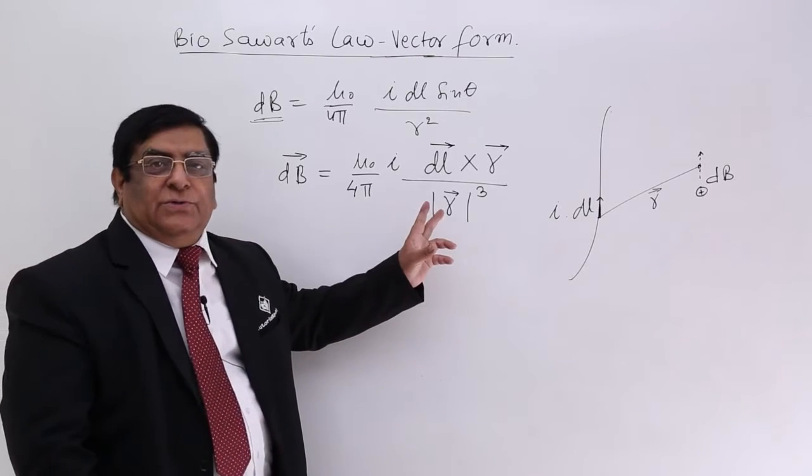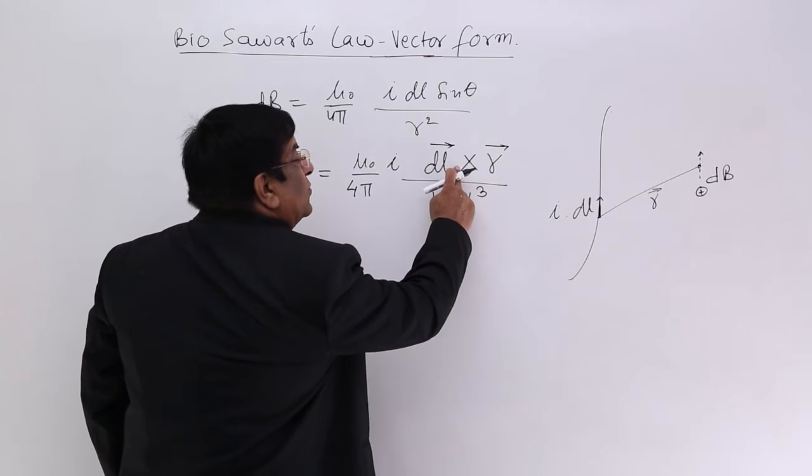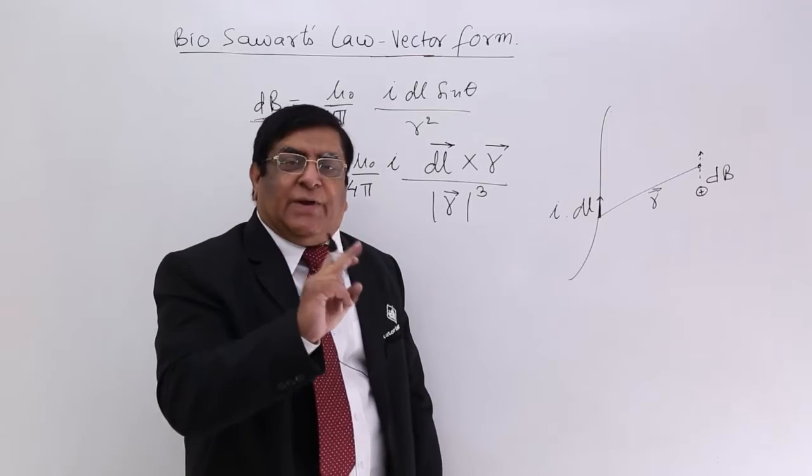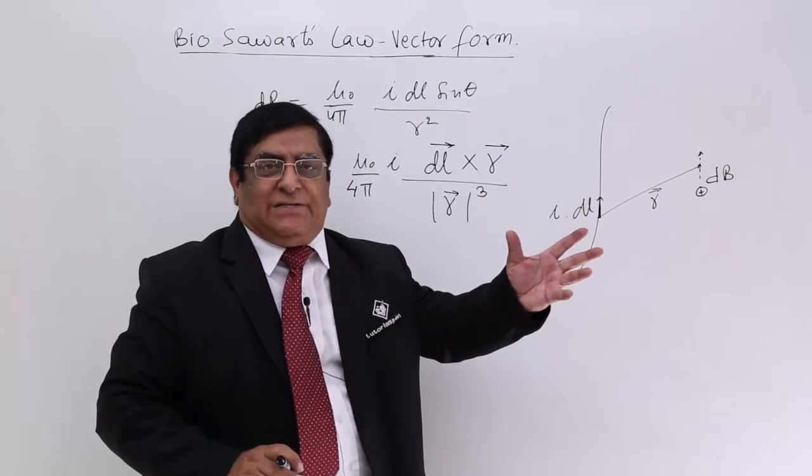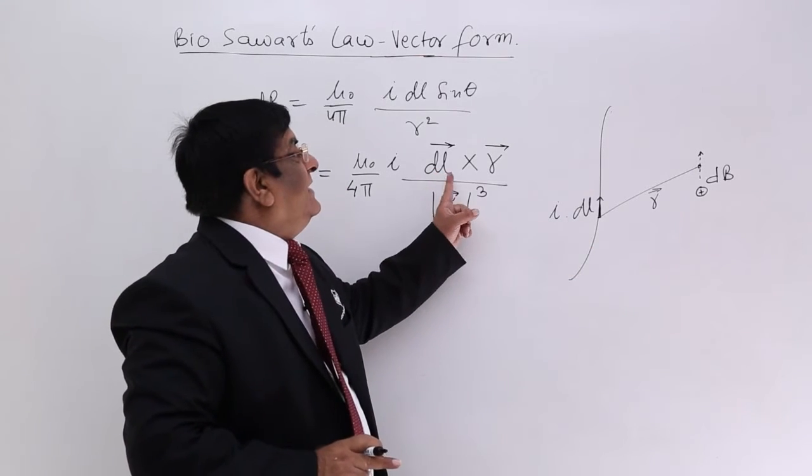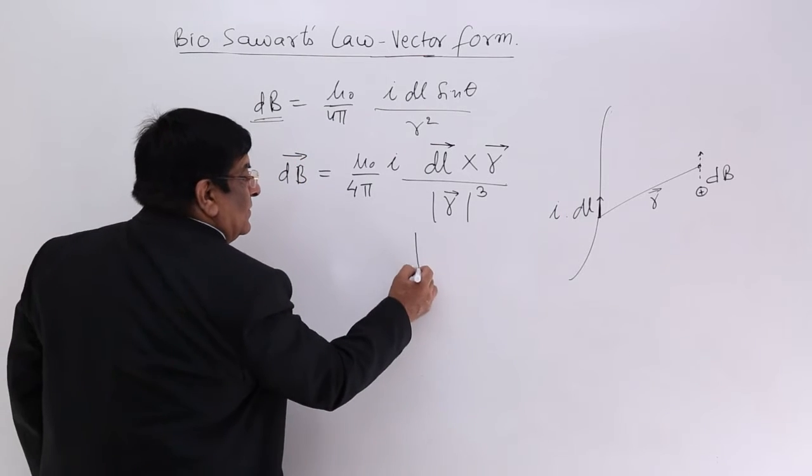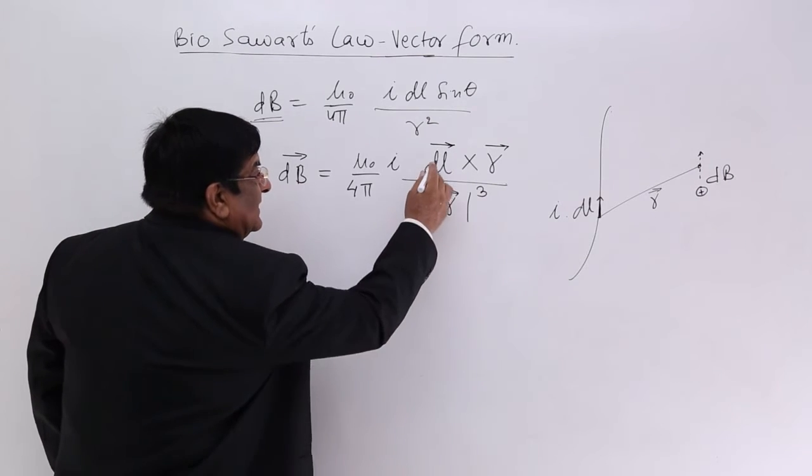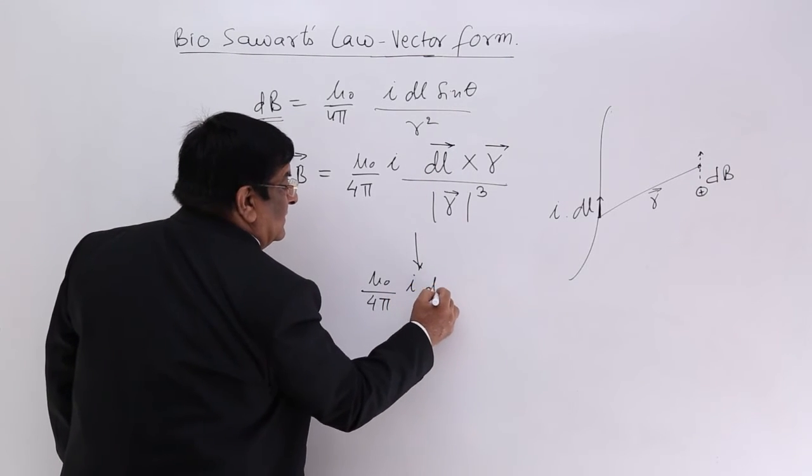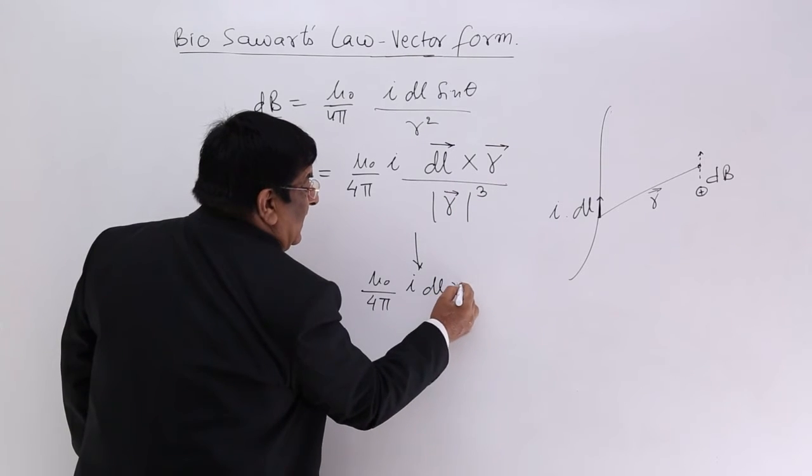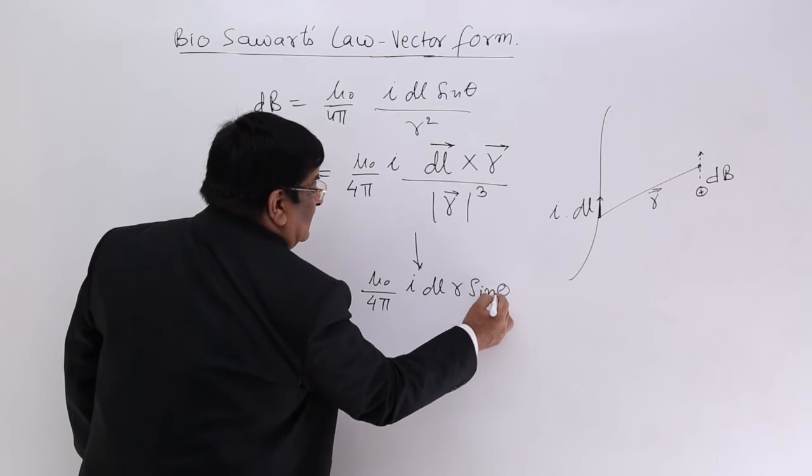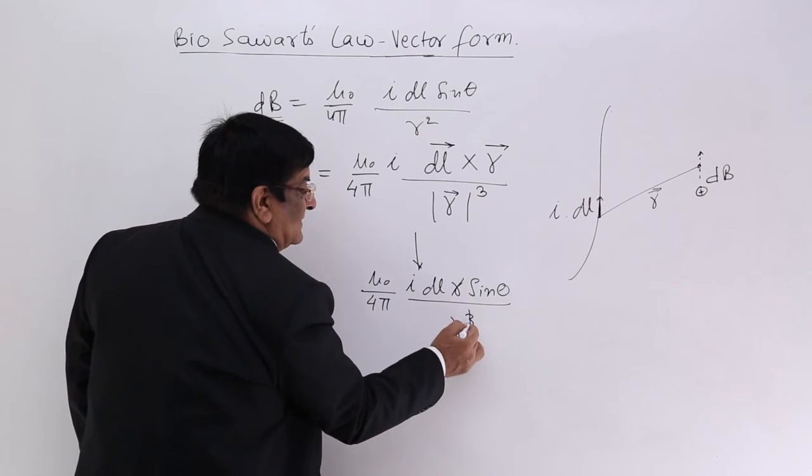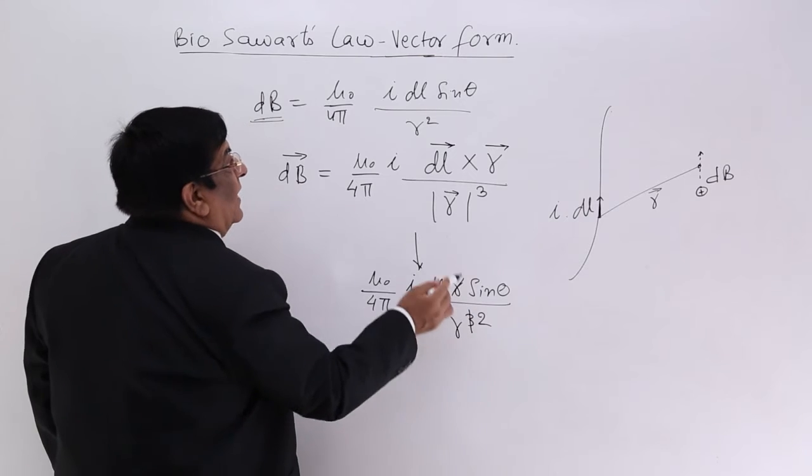Now if I ask you to find out its magnitude, then you know the magnitude of a cross product: vector a cross vector b is equal to ab sine theta. So this will also be dl r sine theta. This will be μ₀/4π and this will be i dl into r, which is dl r sine theta, divided by r cube. One r is cancelled: i dl sine theta upon r square.